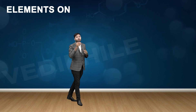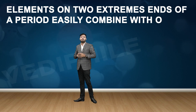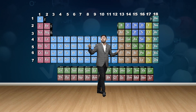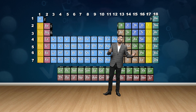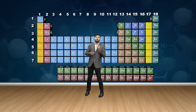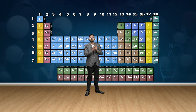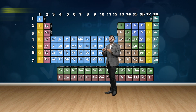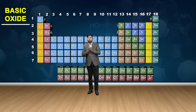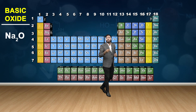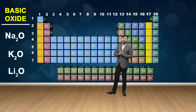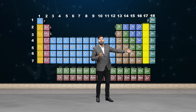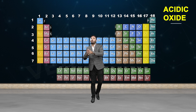Elements on the two extreme ends of a period easily combine with oxygen to form oxides. For example, elements of the first group or the seventeenth group will form oxides. The extreme left elements will form the most basic oxides — for example, Na2O, K2O, and Li2O are all basic oxides formed by extreme left elements. Whereas the elements on the extreme right will form the most acidic oxides.